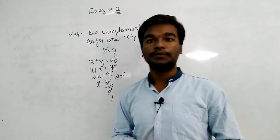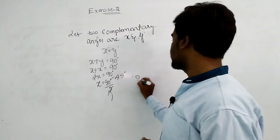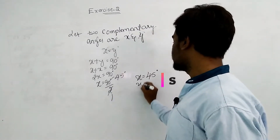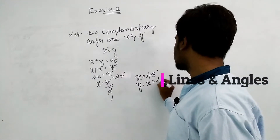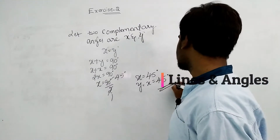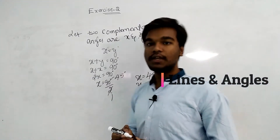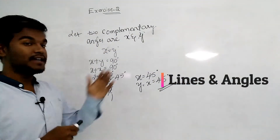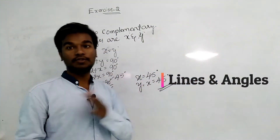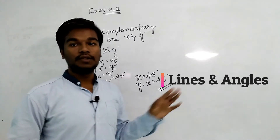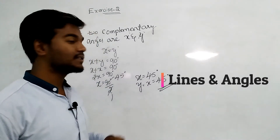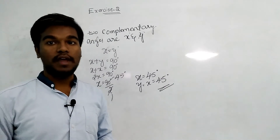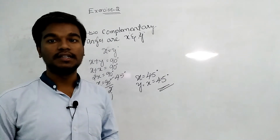So x is equals to 45 degrees and y is equals to x, that is equals to 45 degrees. The two equal complementary angles are 45 degrees each. 45 degrees is complementary to the other 45 degrees.